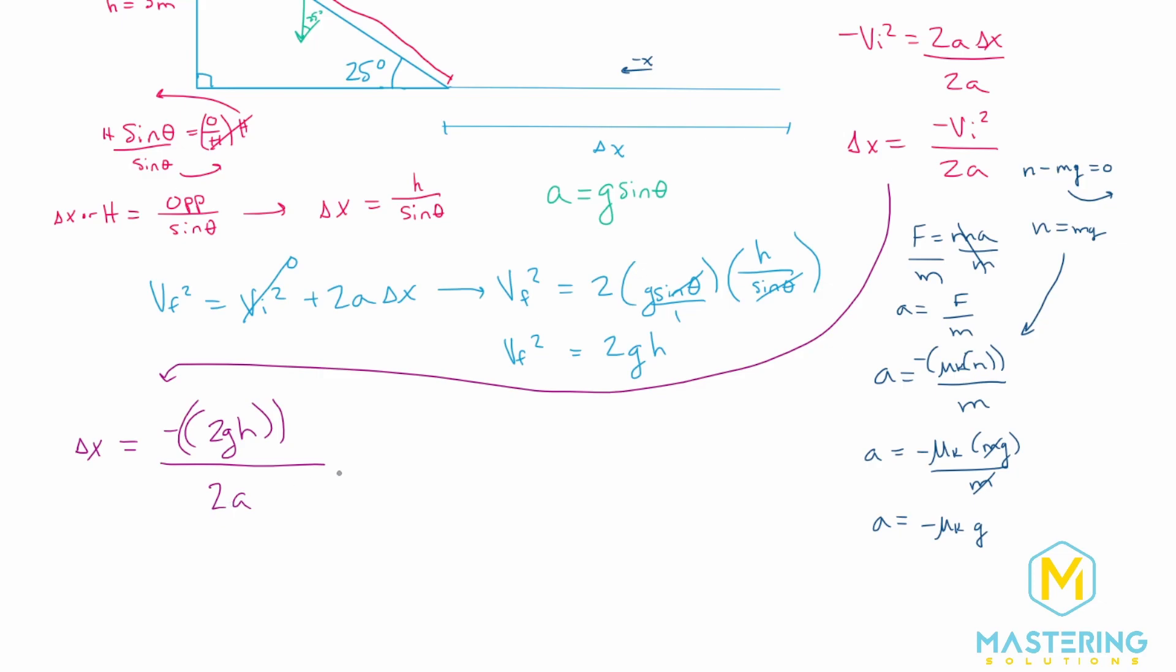So now plugging that in over here, we have negative 2gh divided by 2 times acceleration, negative mu sub k times gravity. Now that looks kind of complex, but it's actually not because a lot of it simplifies.